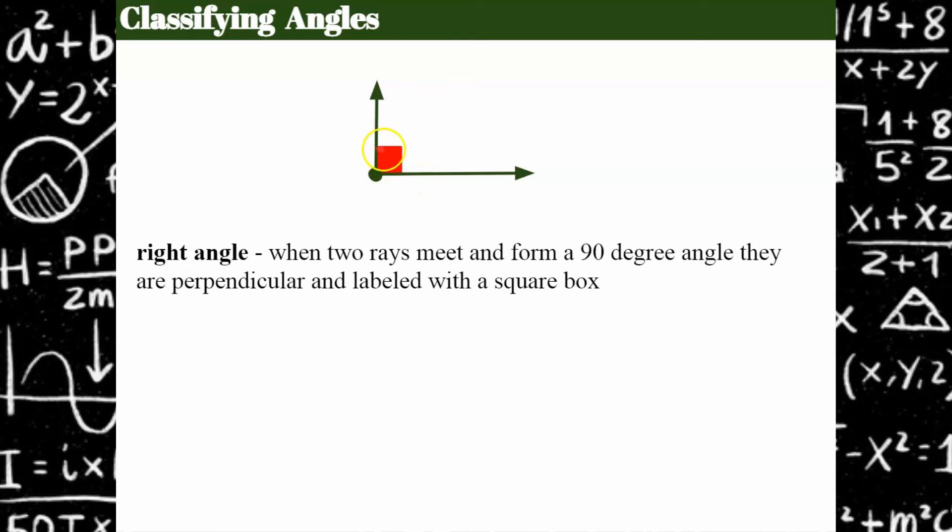There's a special symbol right here, this box. This box tells you that it's a right angle. The two rays meet to form a right angle. They're perpendicular, and we see them labeled with this box, identifying that they're perpendicular and have a measure of 90 degrees. So we call that a right angle.